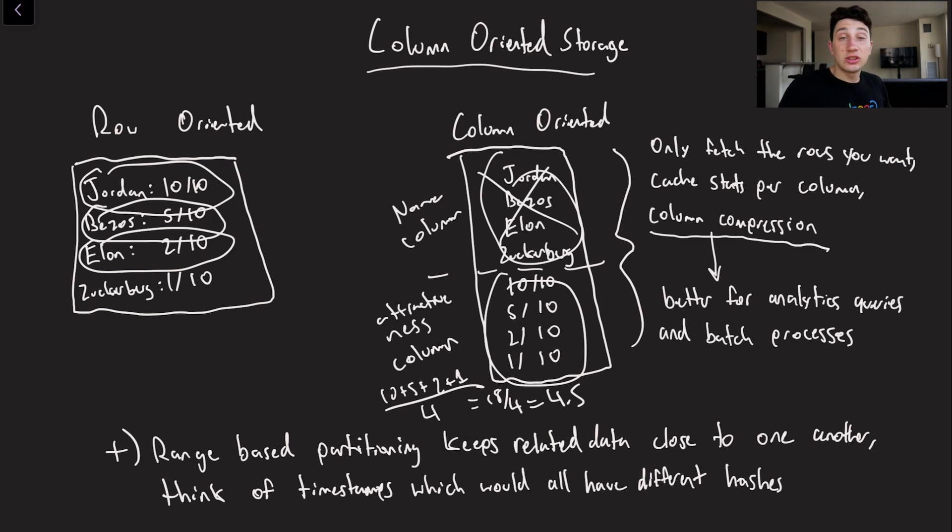So that would be useful for us. And of course if these column values are super similar as well, we can perform some column compression to basically just speed up our queries and also minimize the amount of data on disk that we're taking up.